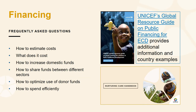A key element of the Lead and Invest pillar is financing. We are grappling with complex questions: how can we bring new resources into this agenda, ensure existing resources are used efficiently and support the most vulnerable children and families, and how can we promote budget coordination among the different sectors that provide services to children? These questions are addressed in the Nurturing Care Handbook and UNICEF's Global Resource Guide on Public Financing for ECD, which contain recommendations and country examples.